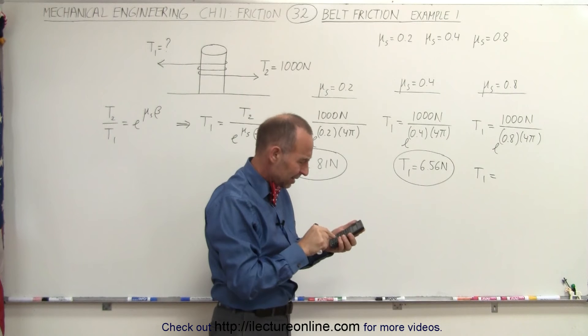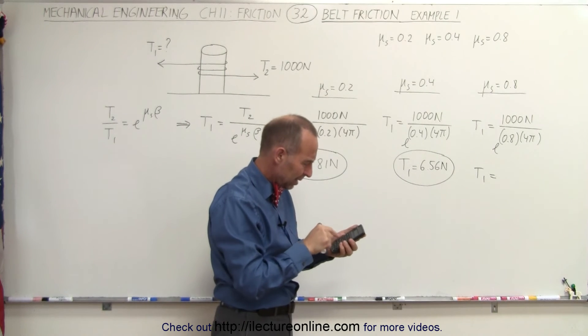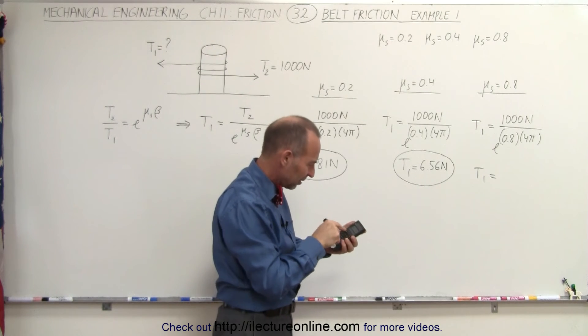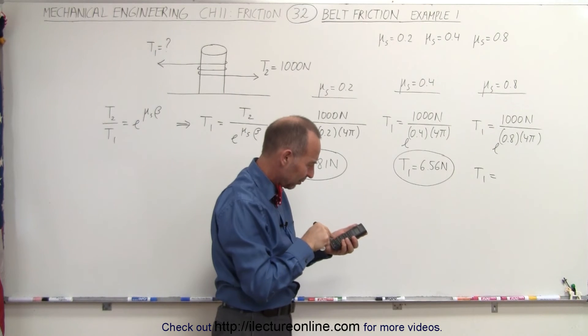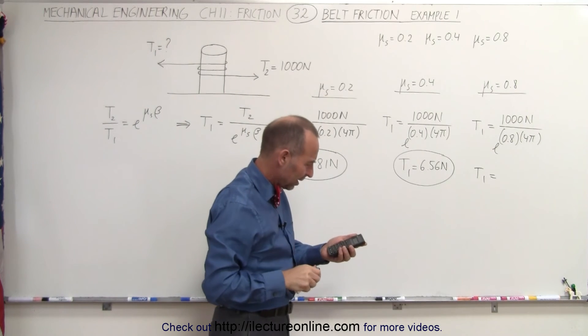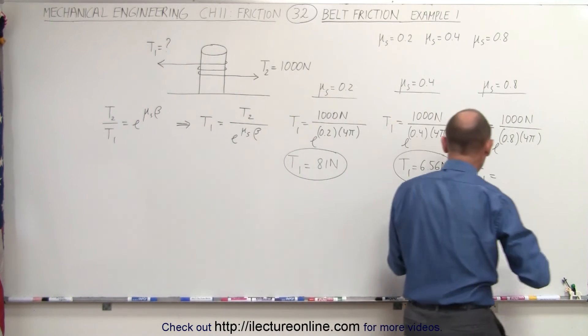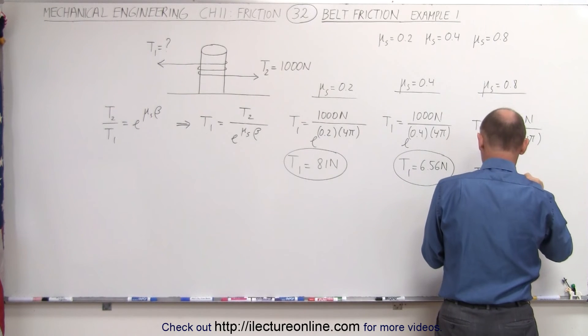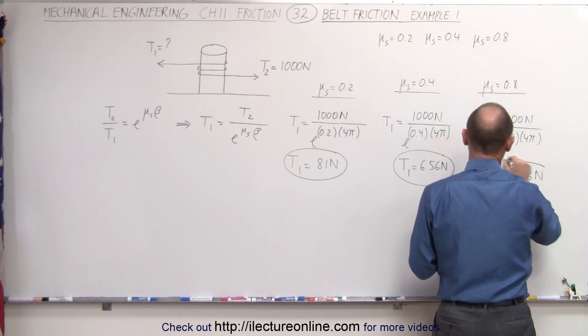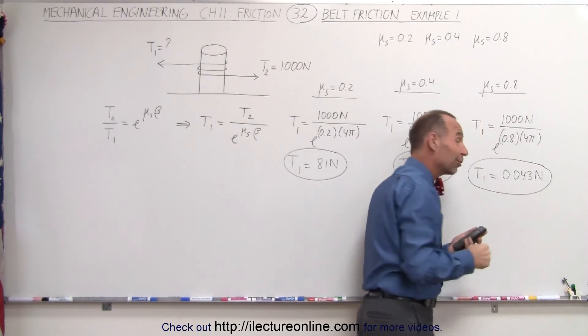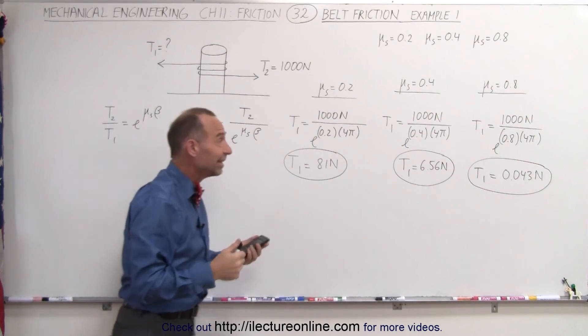And let's see what that now becomes. So we get 0.8 times 4 times π as an exponent. Take the inverse of that times 1,000. And now we get just a small fraction of a newton, 0.043 newtons. That's almost hard to believe. And that's indeed the case.